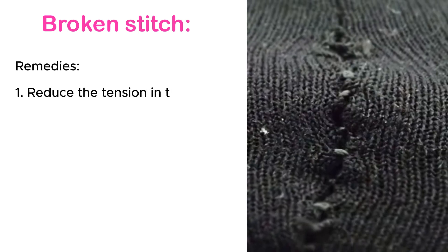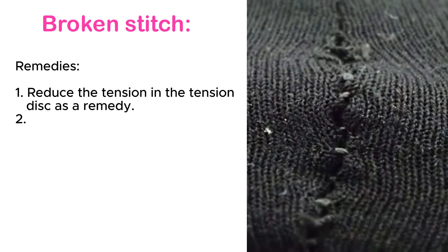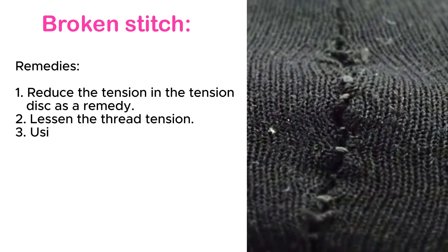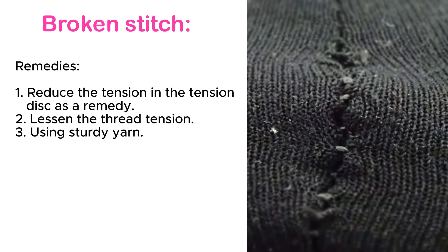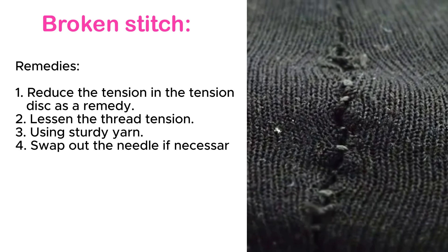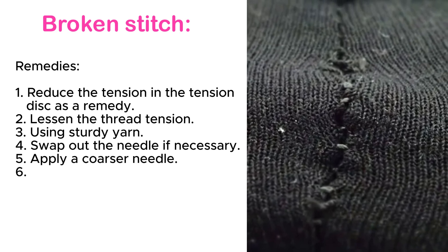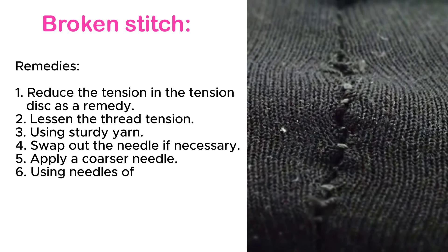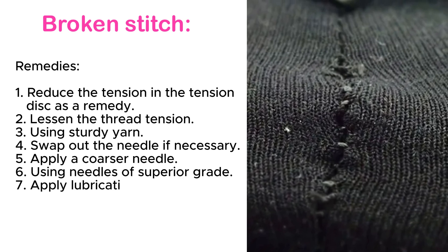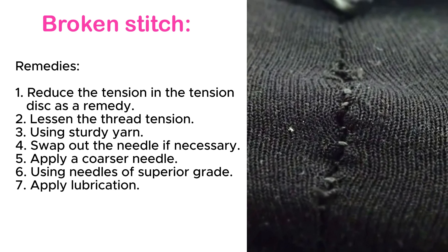Remedies for broken stitch: reduce the tension in the tension disc. Lessen the thread tension. Using sturdy yarn. Swap out the needle if necessary. Apply a coarser needle. Using needles of superior grade, apply lubrication.